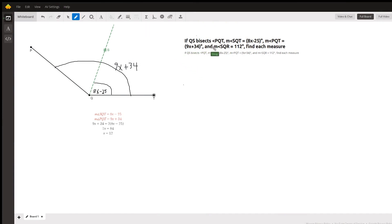Okay, we've got this angle PQT, which these are actually rays here, and that angle is bisected by ray QS, which means cut into two equal parts. You're told that the measure of angle SQT, that's this one right here, has an expression 8x minus 25 representing its measure, and angle PQT, which is the big one, is represented by 9x plus 34.